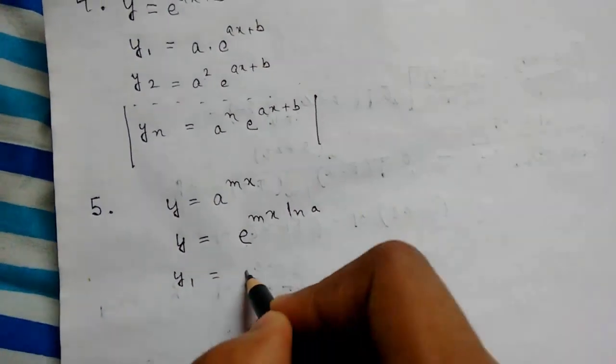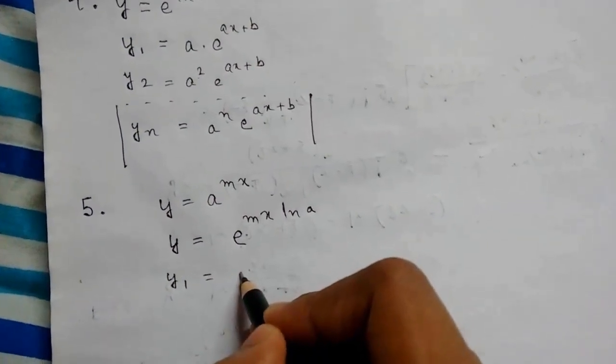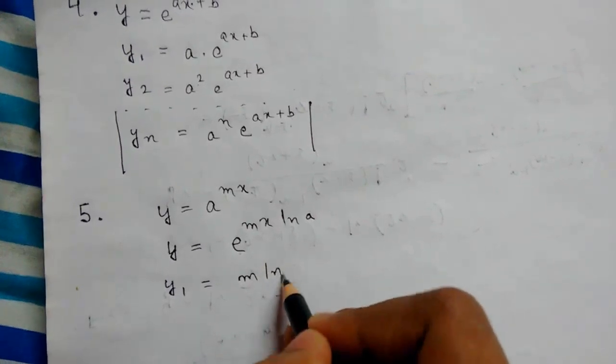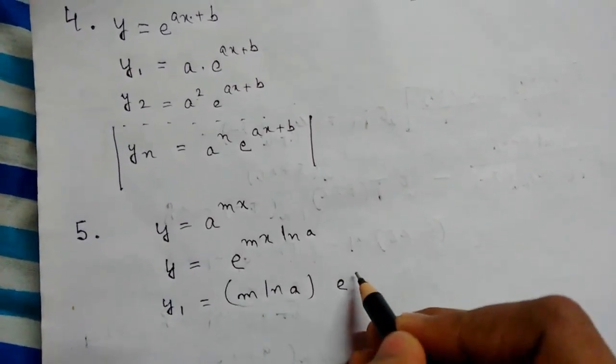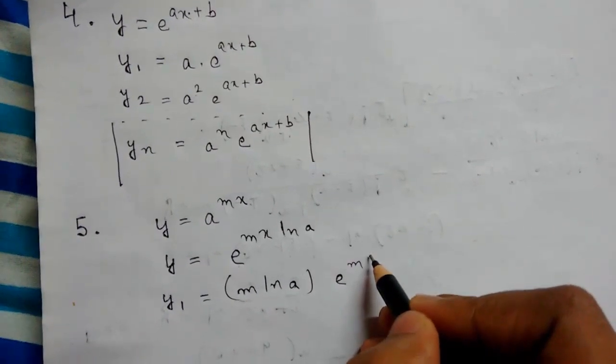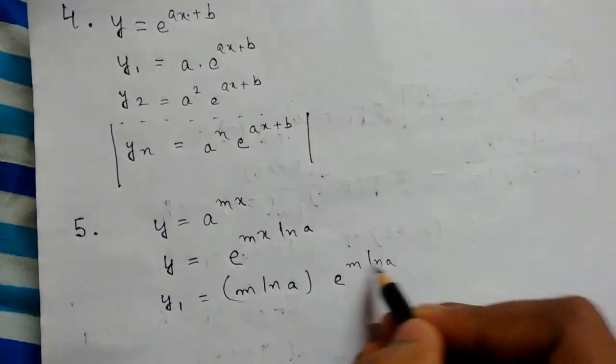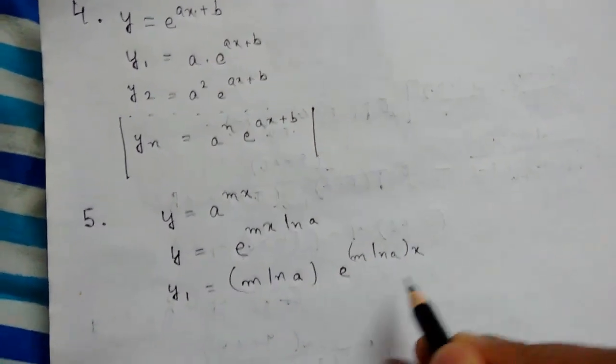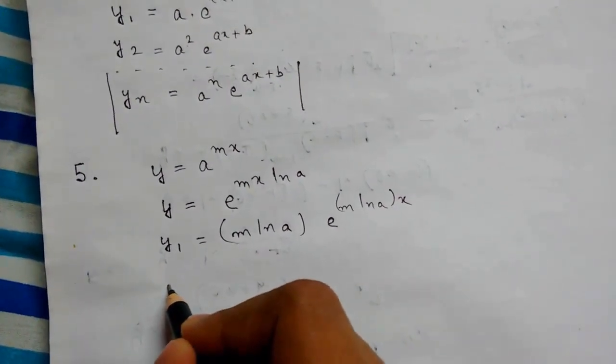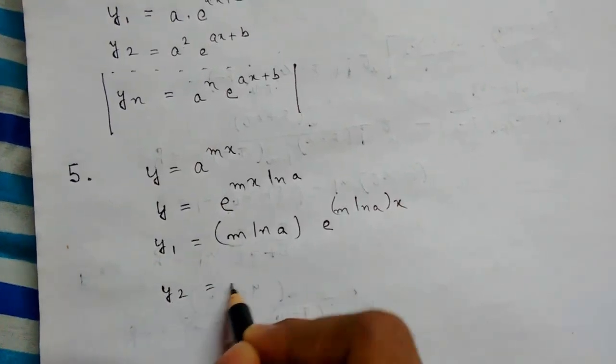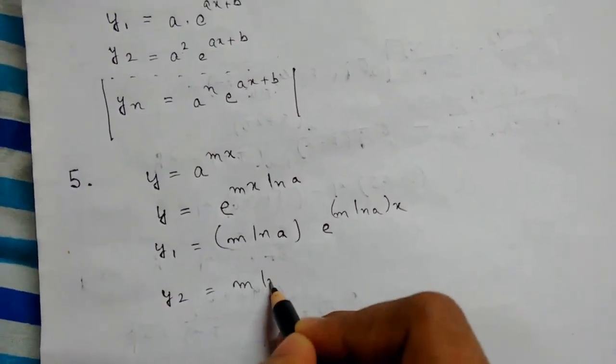m ln a times x. So now we can write y2 equals m ln a whole squared, times e to the power m ln a times x.